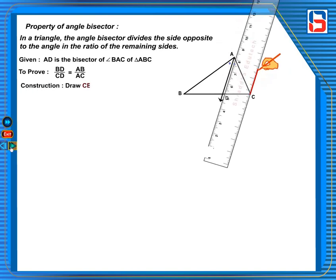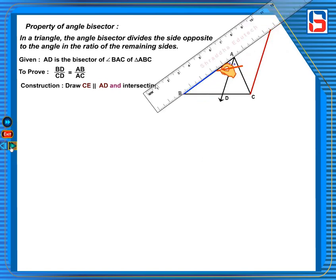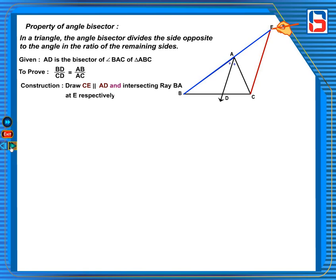Construction: Draw CE parallel to AD, intersecting ray BA at E respectively.